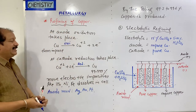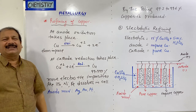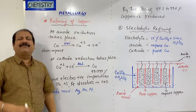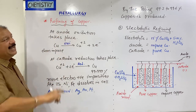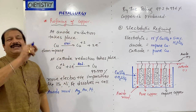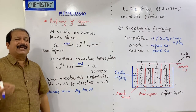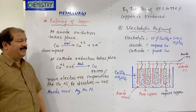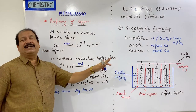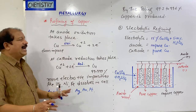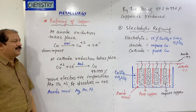So electrolytic refining gives 99.999% purity. The reason we need electrolytic refining is that poling only gives 99.2%–99.6%. To represent 99.999% — five nines — we use electrolytic refining. This completes the extraction of copper from sulphide ore.